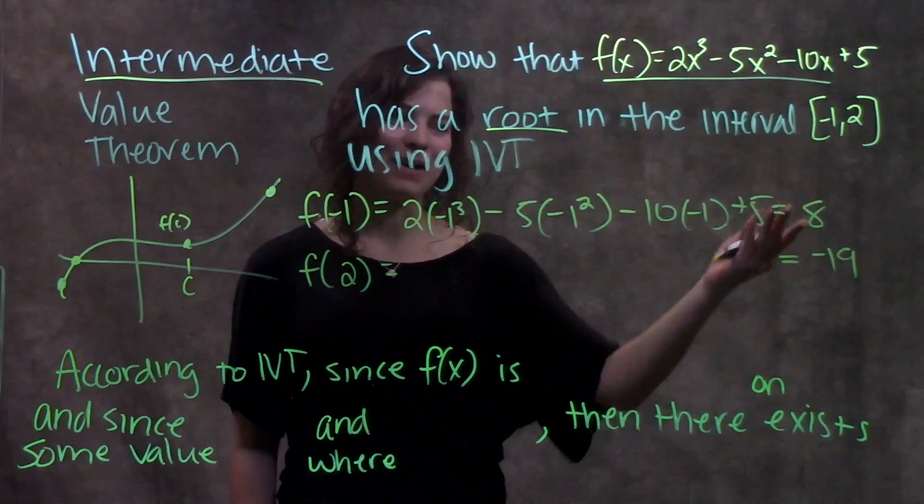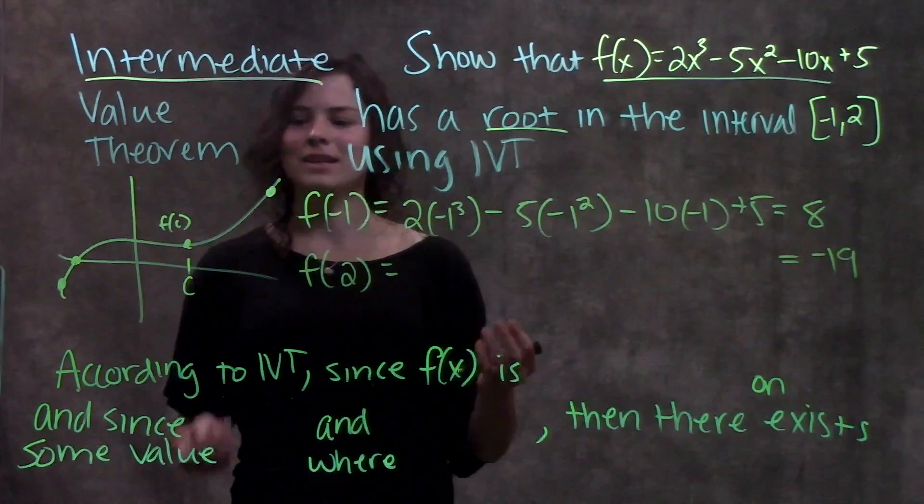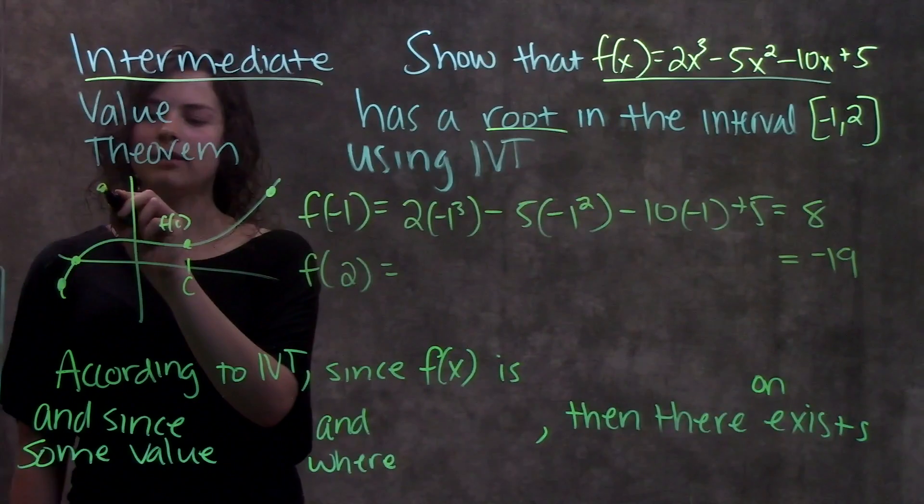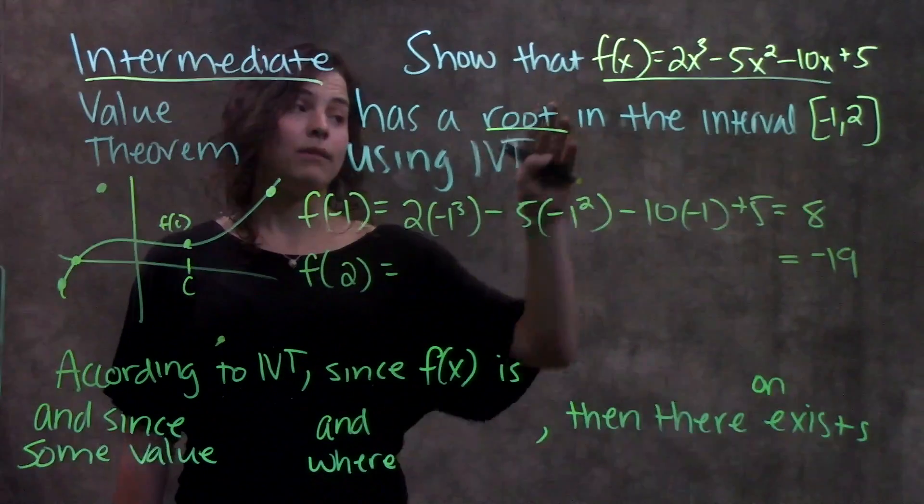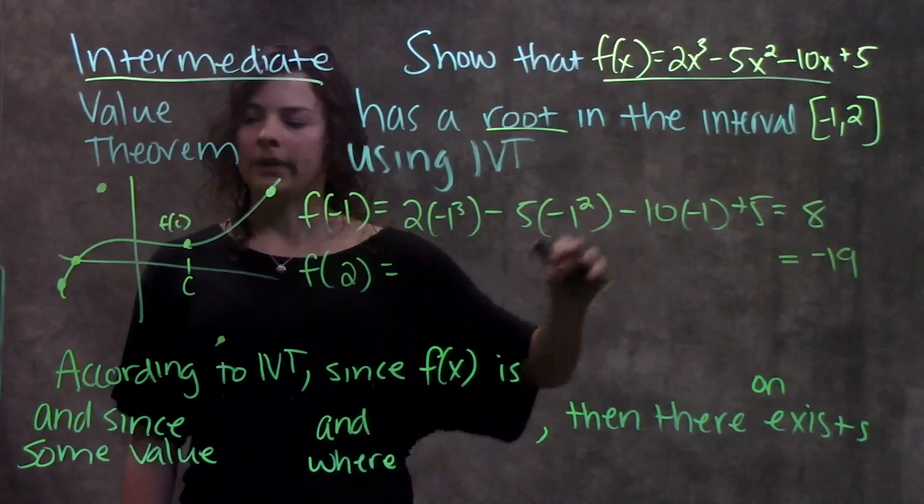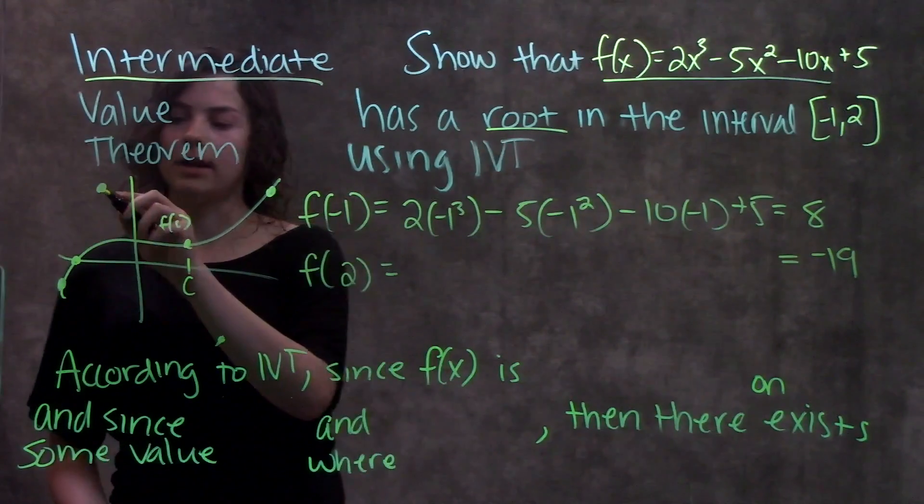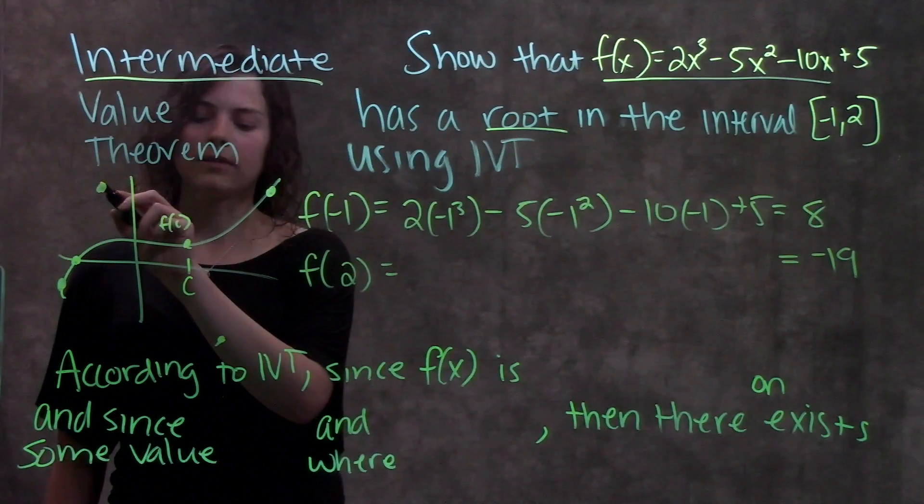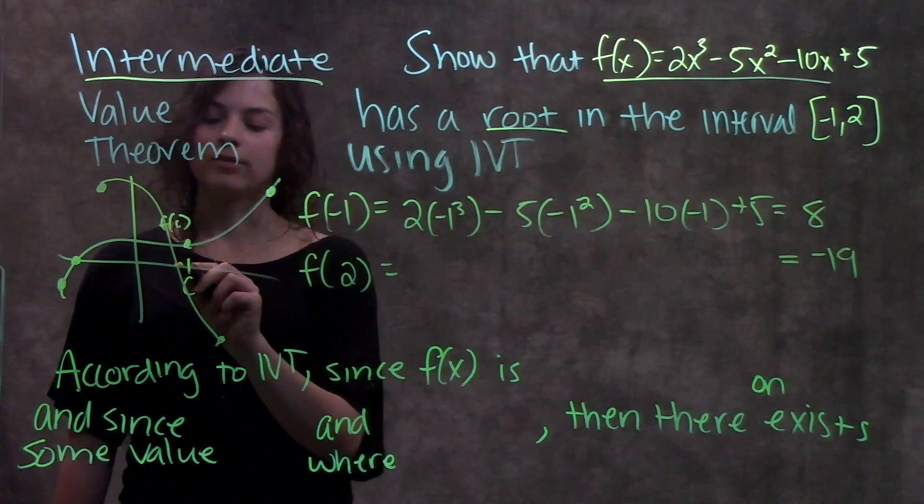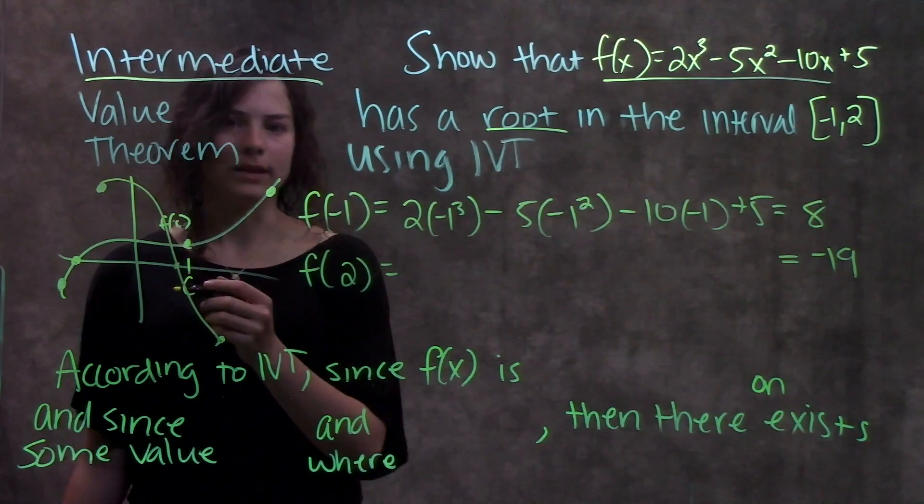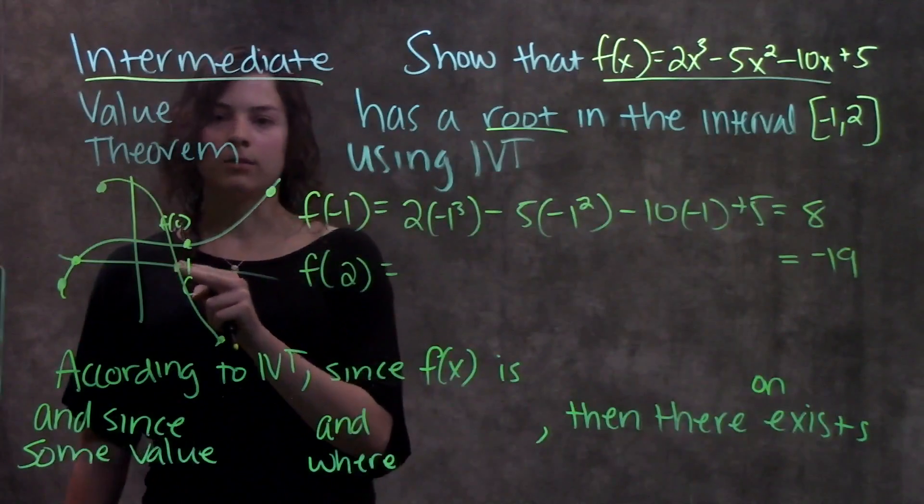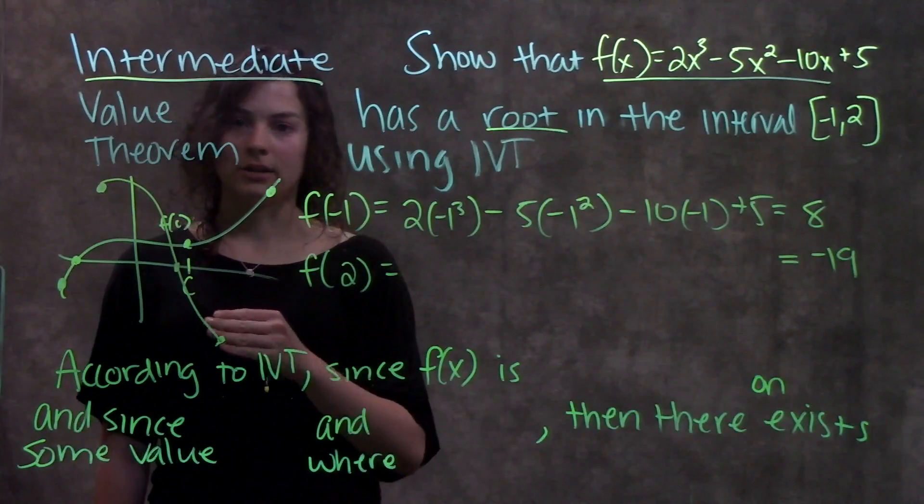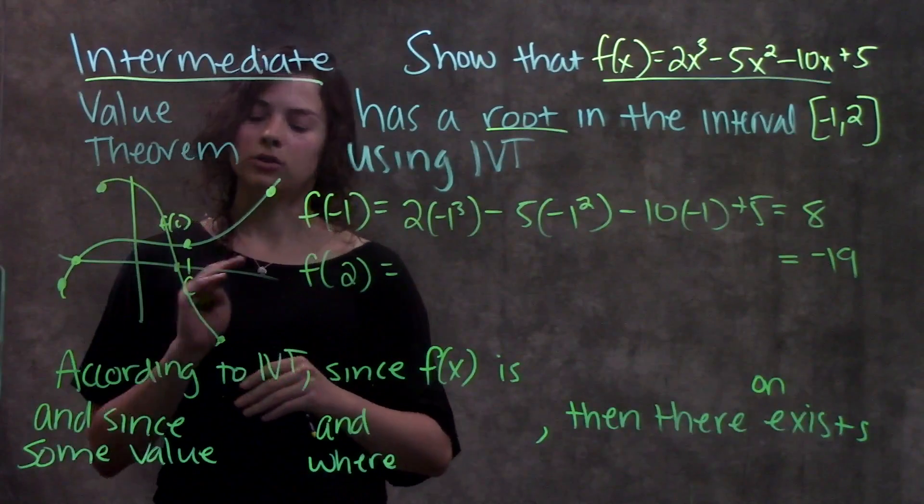Convenient, right? We have a positive and a negative value. So just thinking about this, if we have some positive value here at eight and then some negative value here at negative 19, and we already said that this function is continuous, I don't know what this function looks like, but I do know that in order to get from positive eight down to negative 19, I have to cross this x-axis at least once. So I know that in this interval, there is a root between negative one and two because it goes from a positive value to a negative value.